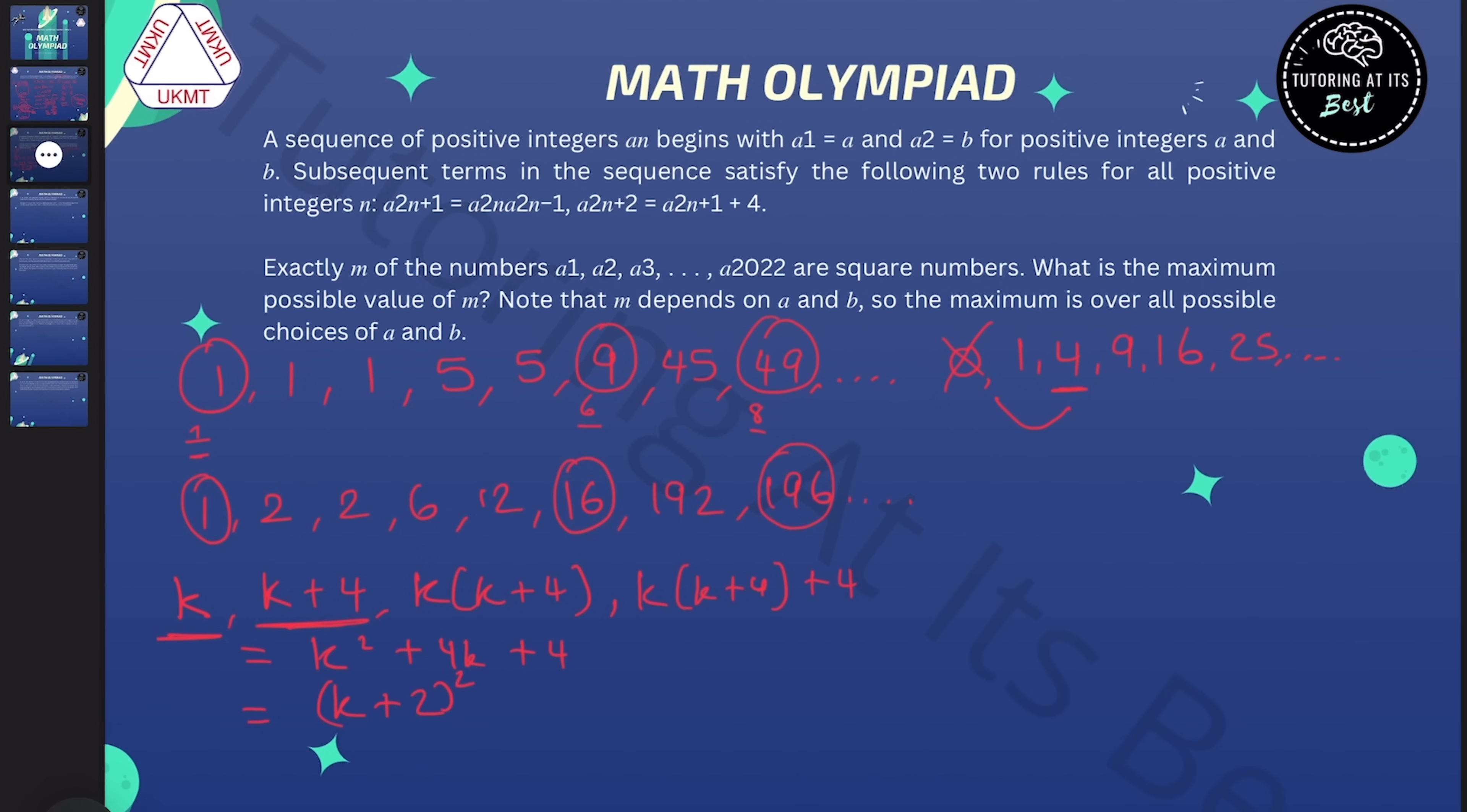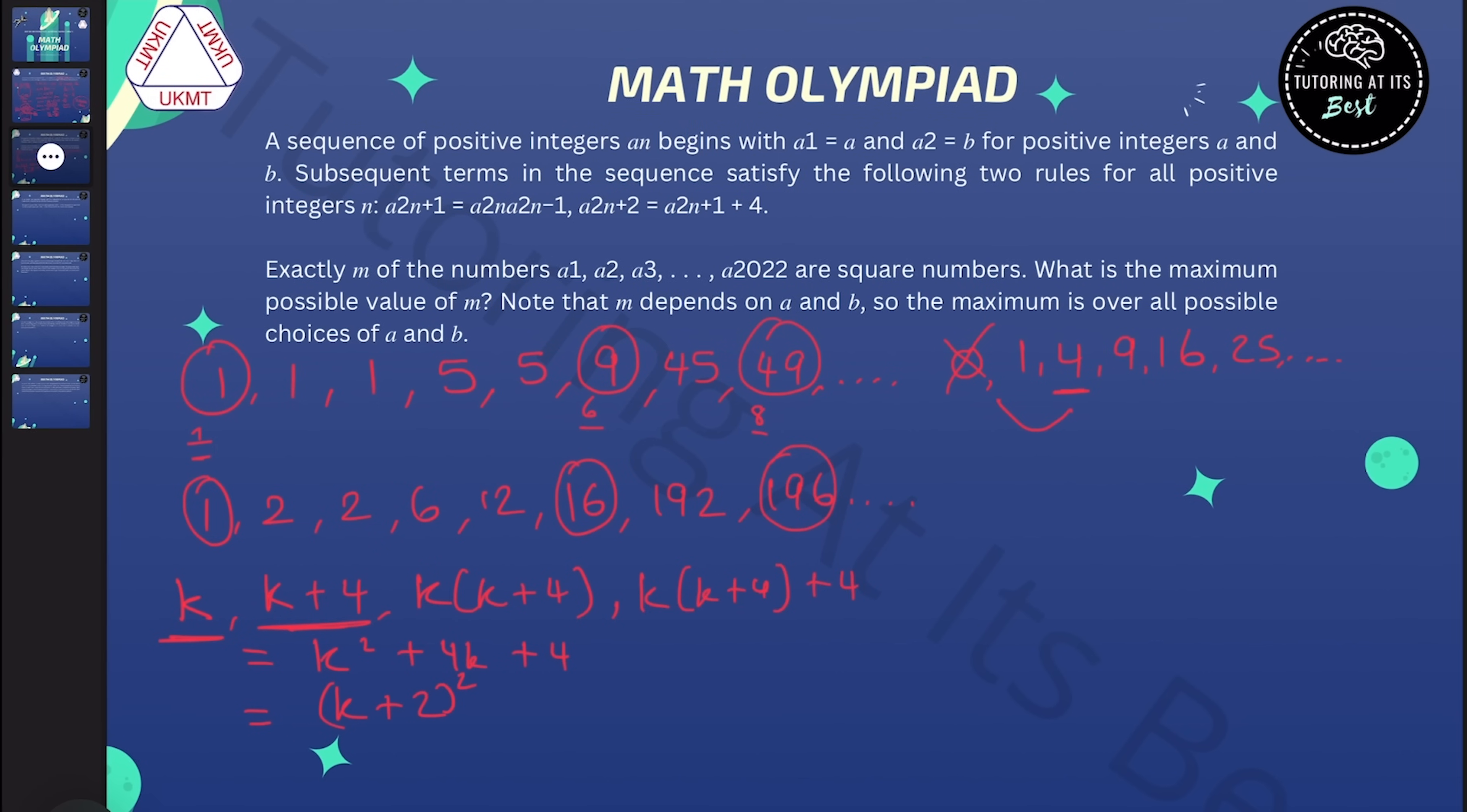So we've now worked out that the sixth, eighth, tenth terms are all squares, whereas the fifth, seventh, and ninth terms and so on are not squares. So all that remains is to think about what happens with the first, second, third, and fourth terms.